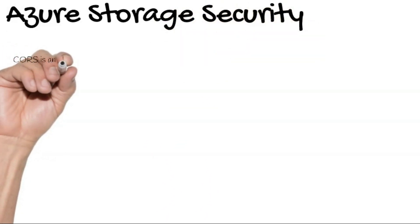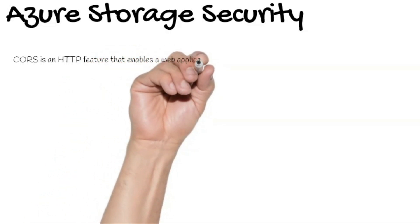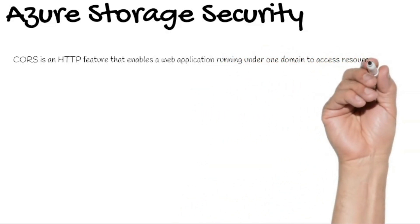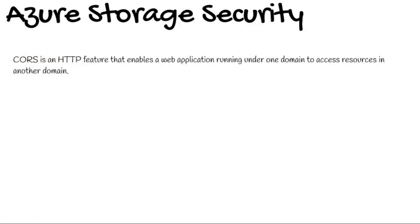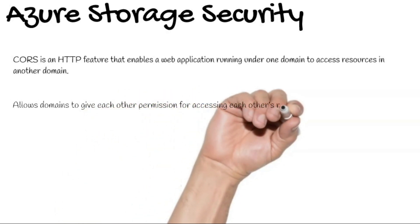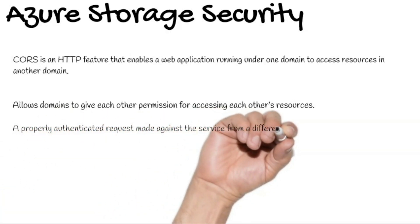Enabling browser-based clients using CORS — an HTTP feature that enables a web application running under one domain to access resources in another domain. For example, when you click on a URL while shopping on Amazon.com and get redirected to another website, that is called cross-origin resource sharing. It allows domains to give each other permission for accessing each other's resources. It is a properly authenticated request made against a service from a different domain, evaluated to determine whether it is allowed according to specified rules.